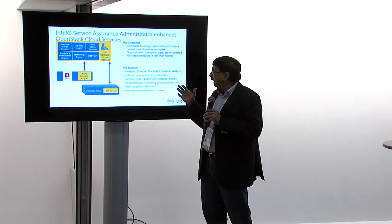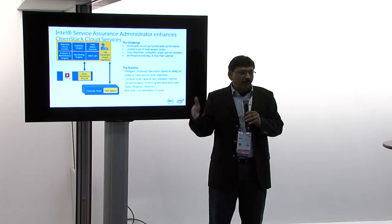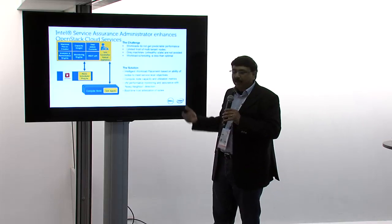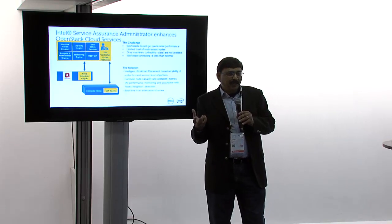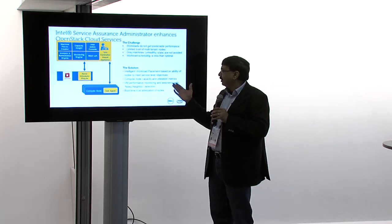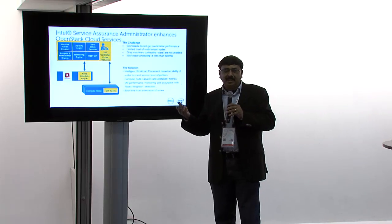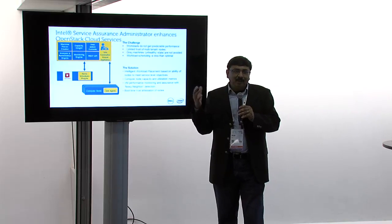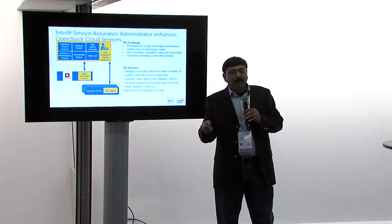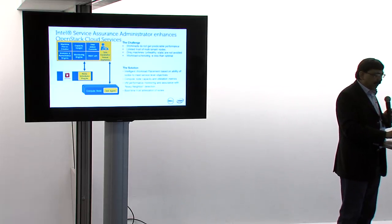We came up with an intelligent workload placement algorithm that looks at health status, prioritizes all the systems, and picks the right physical host on which your VM should land. We've enhanced the Nova scheduler in OpenStack. We've developed a compute metric — Service Compute Units — so the user can specify how much compute they want and make sure they get it. We also monitor noisy neighbor conditions like cache contention, flag it to the user, so you can take remedial action like moving the noise-making or noise-affected VM to another node.